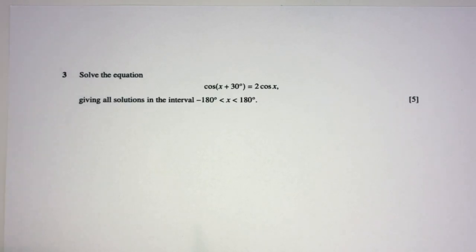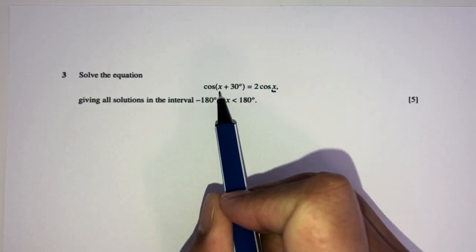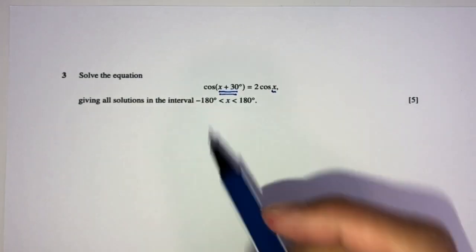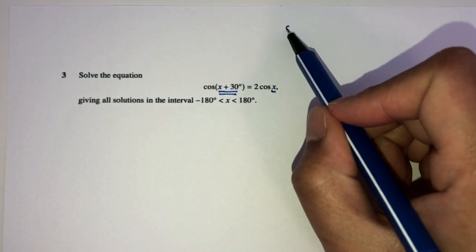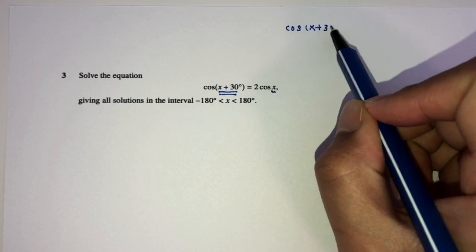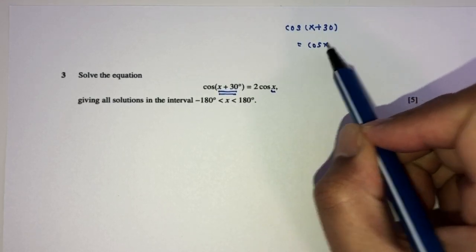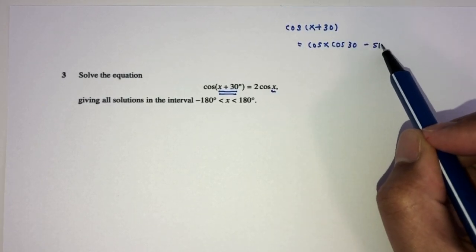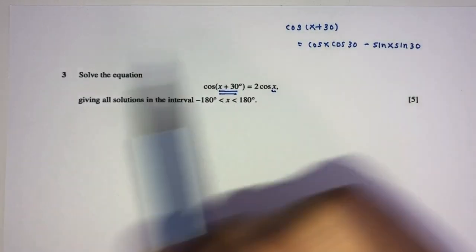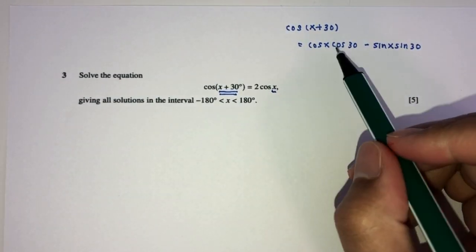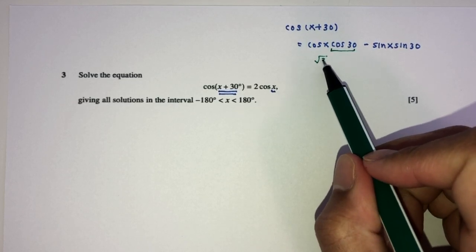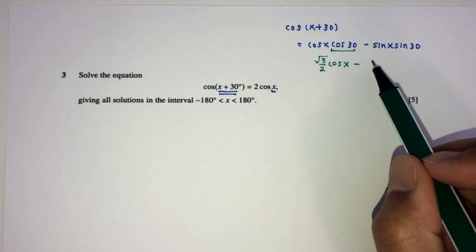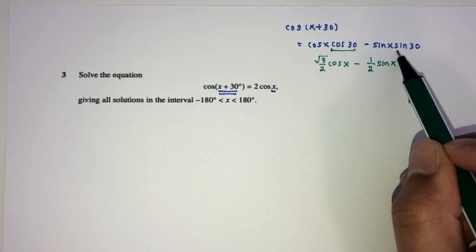Now, let's move on to question number 3. So, here we have to solve the equation. Well, from the first observation, we can realize here we have x, but here we have x+30. So, in a way, we understand we have to expand this whole thing. Now, how do you expand this? By using the formula. Obviously, that will be cos(x) cos(30). That will become minus sin(x) and sin(30). Now, we should know the exact values here. That is what? This is √3/2 cos(x) minus 1/2 sin(x). This is 1/2, right?